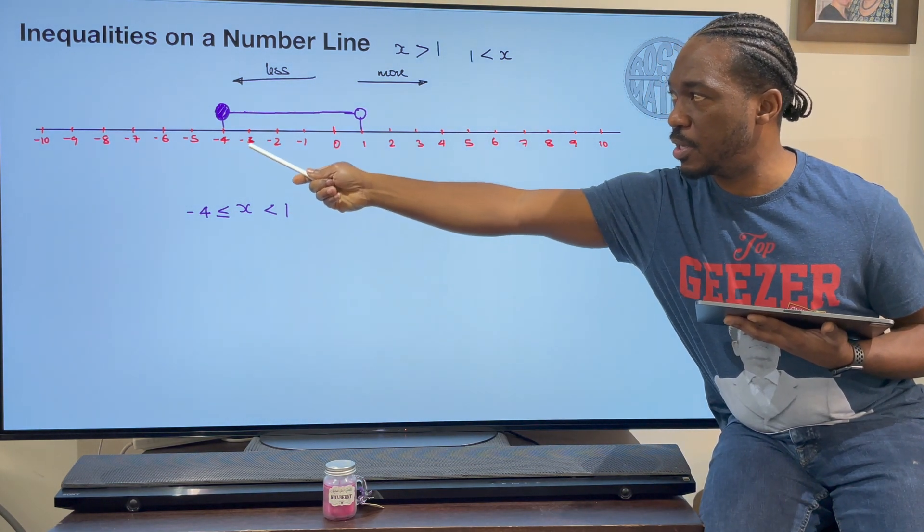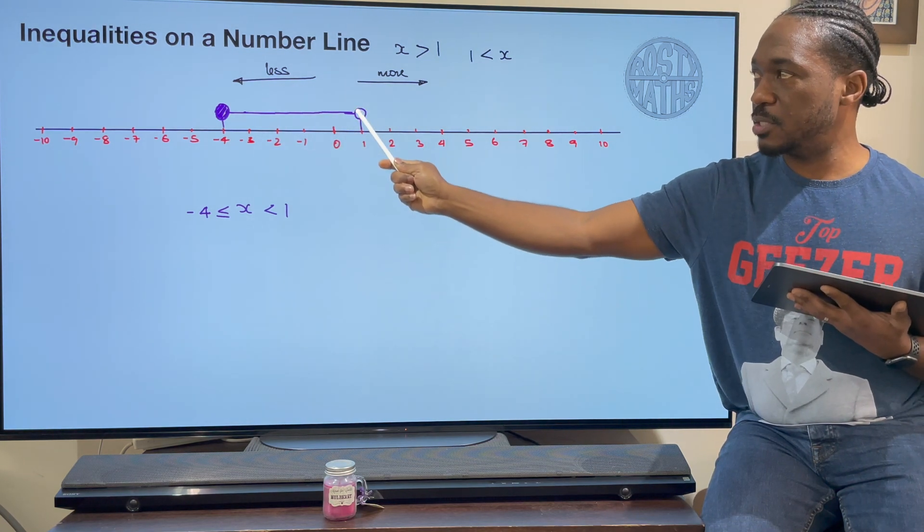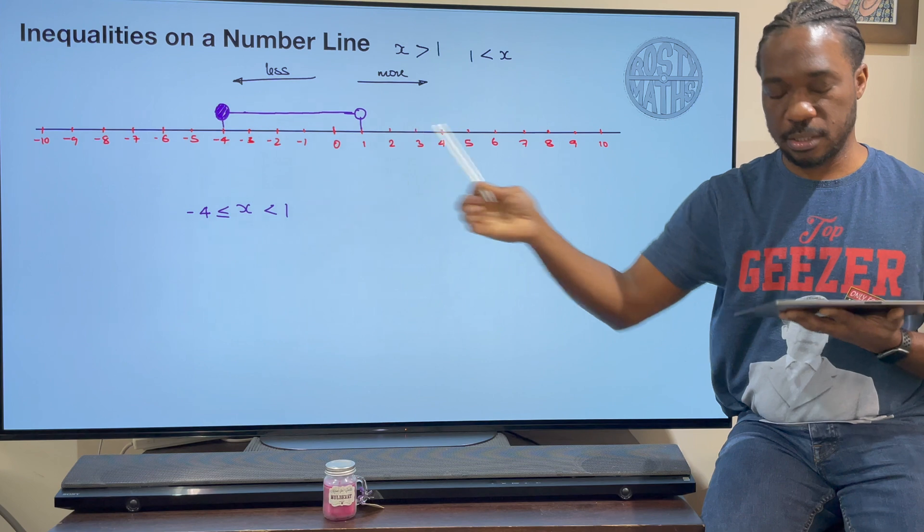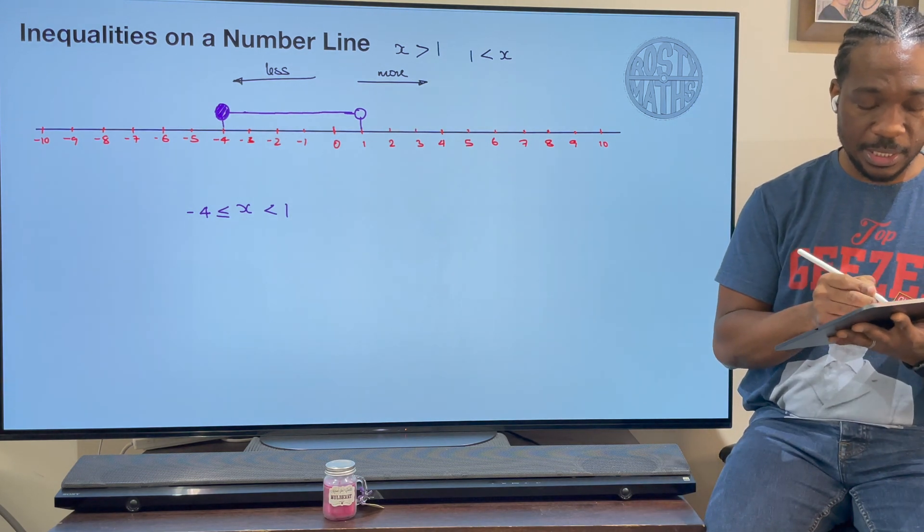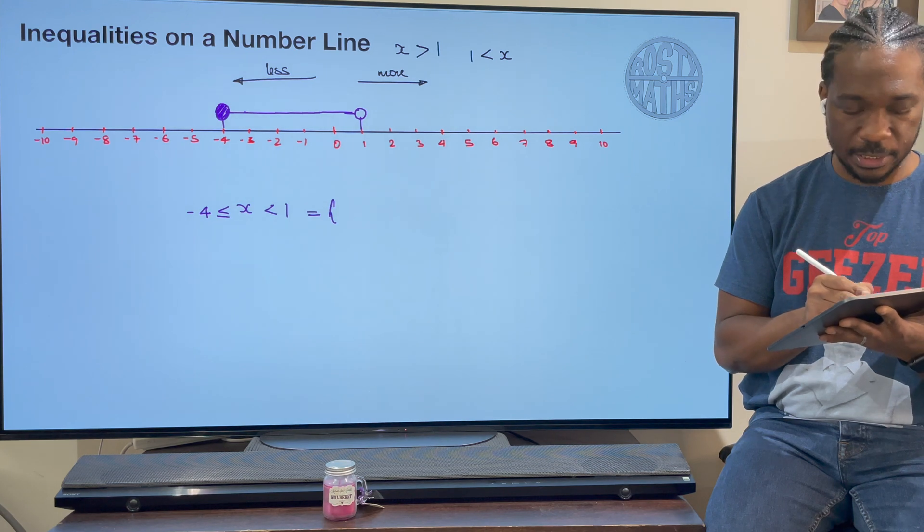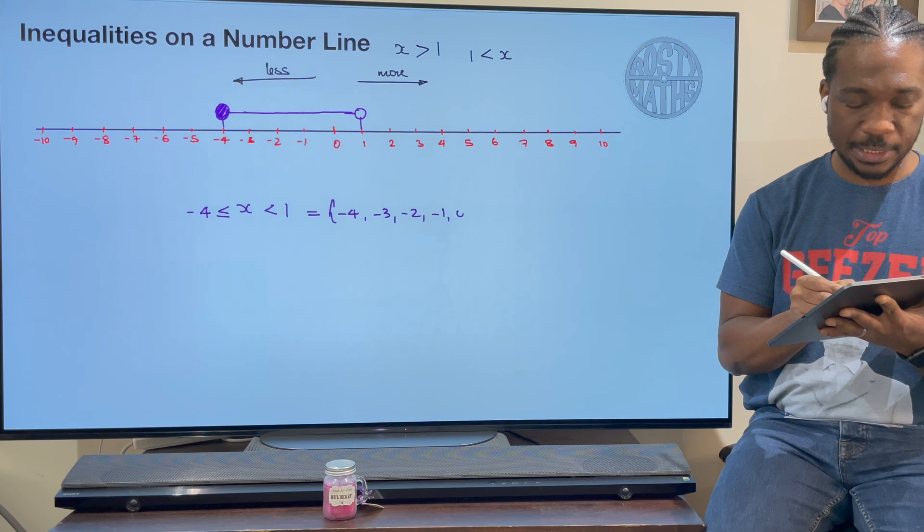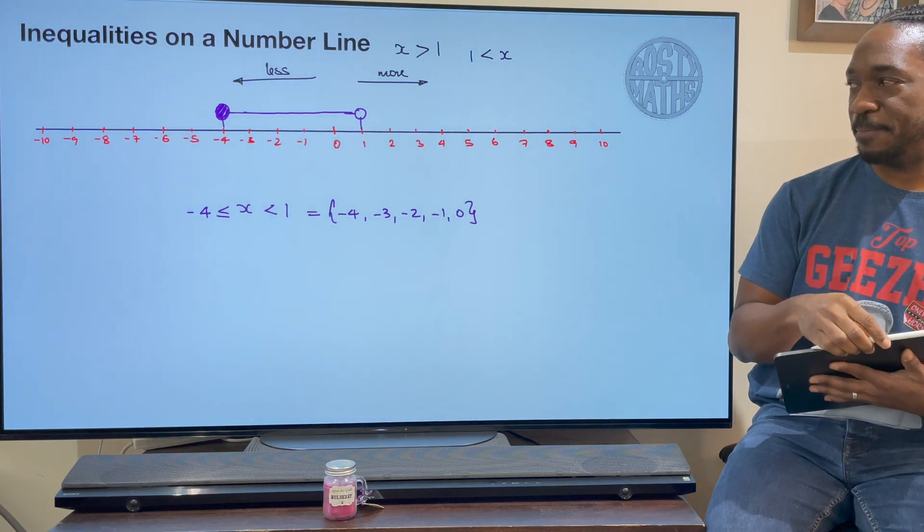We will stop here because this is not colored in and it does not include 1. So if you were to list the integers, put my curly brackets, it would be negative 4, negative 3, negative 2, negative 1, and 0. We will stop here and this is now finished.